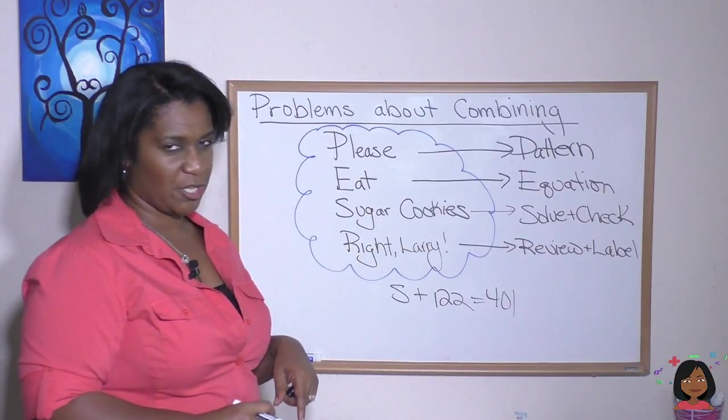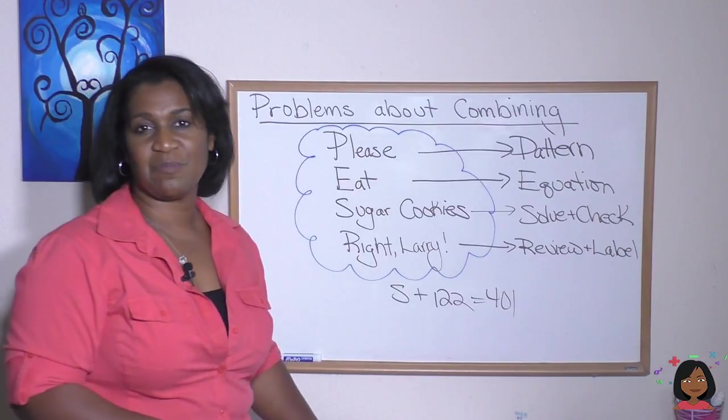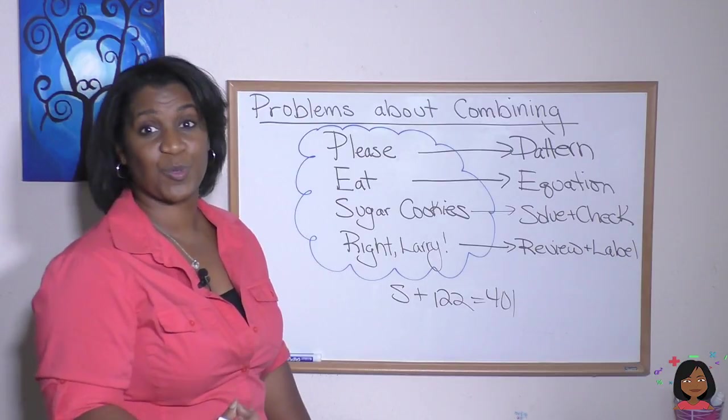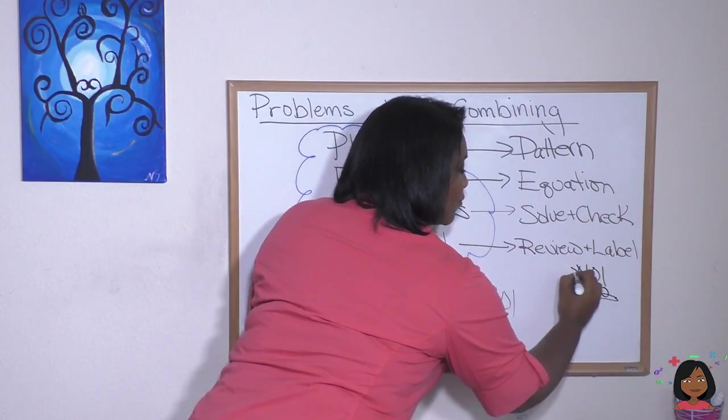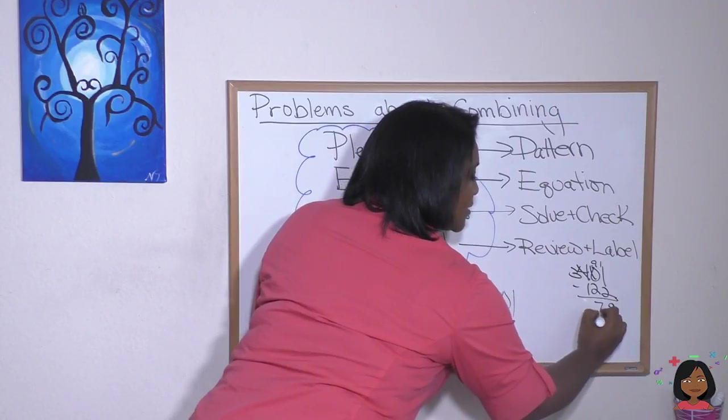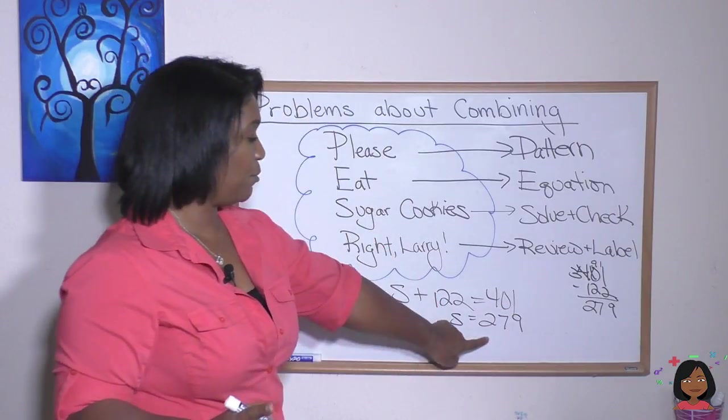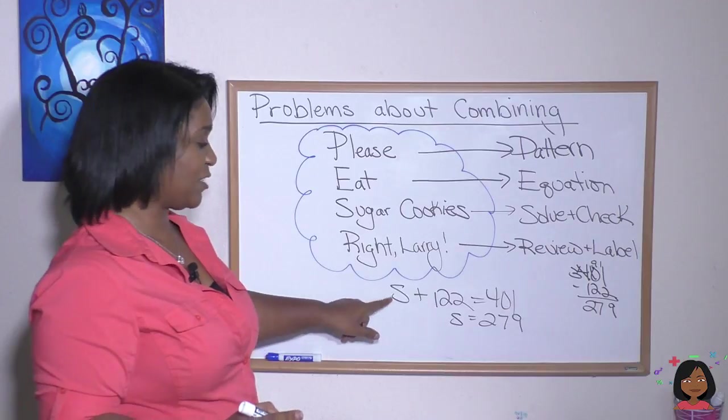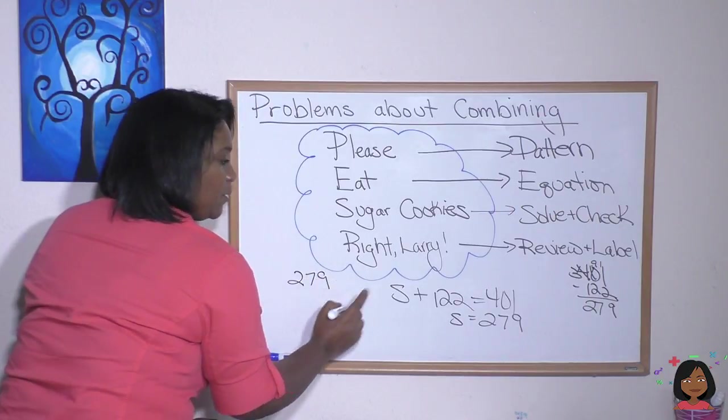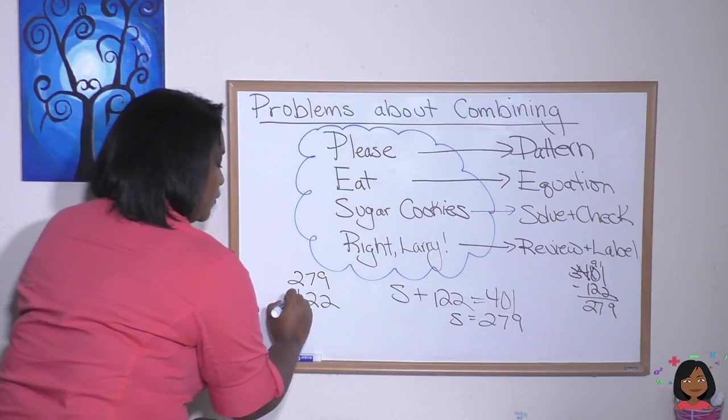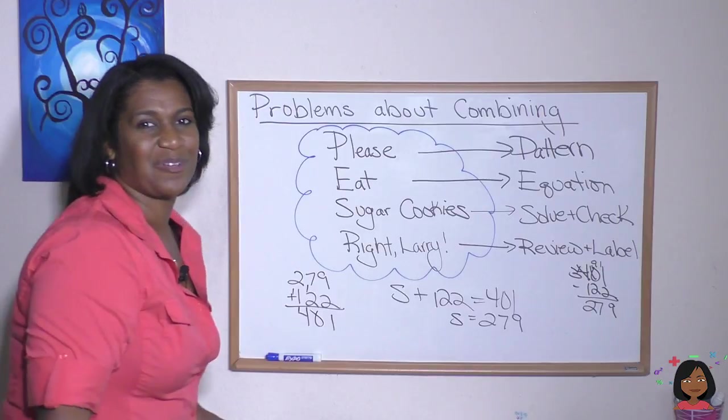Sugar cookies. Sugar cookies is really solve and check. So let's solve this equation and check our answer. Missing number. Missing number in addition means we do the opposite to find it. We subtract. So let's subtract 401 minus 122. And we have to borrow 9, 7, 2. So it says that S equals 279. I'm going to check my answer by putting 279 back in for S, which means I'm going to do 279 plus 122. I'm going to do it over here this time. 279, 122. Add them. 9, 10, 401. And that is our total. So it checks out.